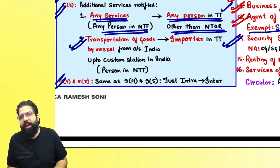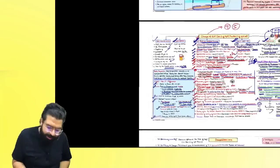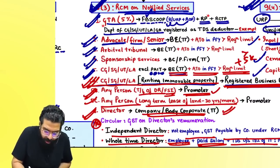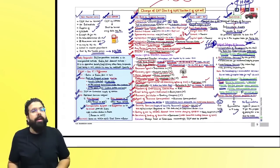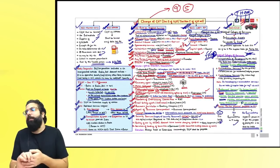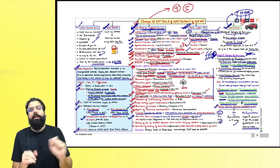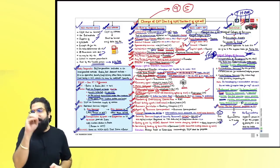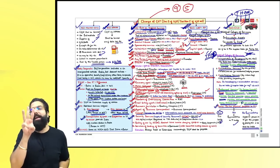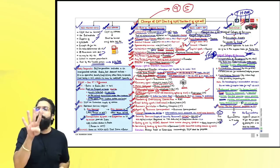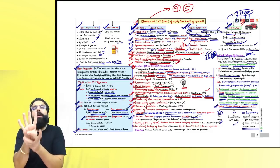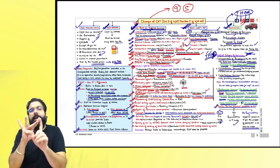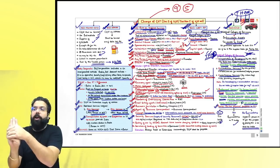Sections 5(4) and 5(5) of the IGST Act are the same as Sections 9(4) and 9(5) respectively — only intrastate becomes interstate. Finally, the definition of 'body corporate': body corporate means an entity incorporated under any law, with a separate legal entity, perpetual succession, and the capacity to sue and be sued. The Companies Act definition is inclusive. It includes Indian companies and foreign companies (corporations). It excludes cooperative societies and any body corporate (other than a company) notified by the government as not being a body corporate.